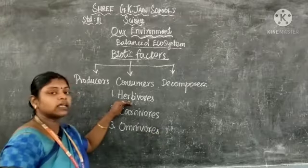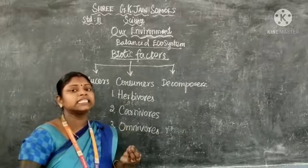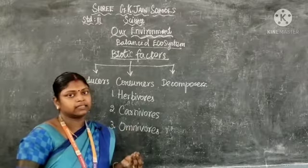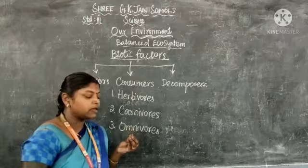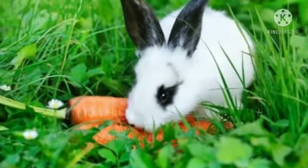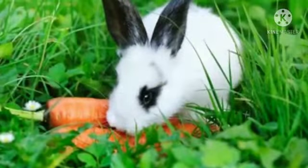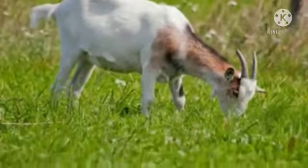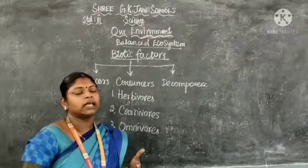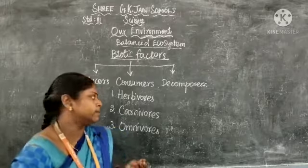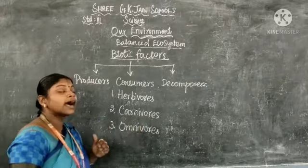Herbivores are plant-eating animals. Examples are rabbit, goat, cow, donkey, and camel. Rabbit eats carrot, goat eats grass, cow eats grass. These are all called herbivores — they are plant-eating animals.